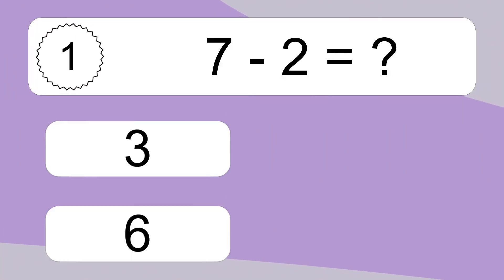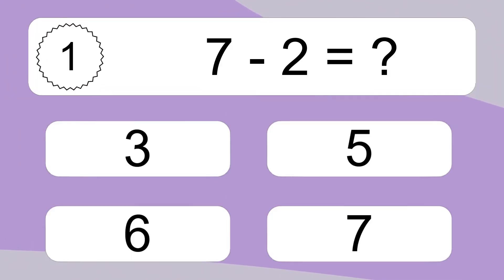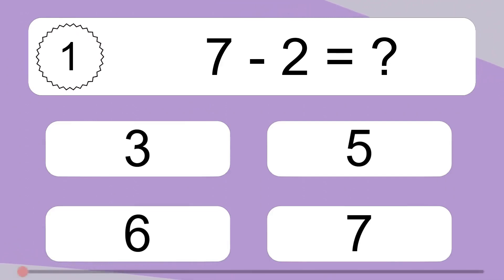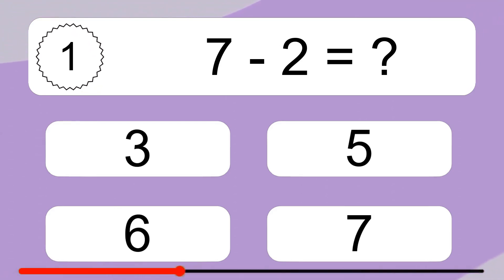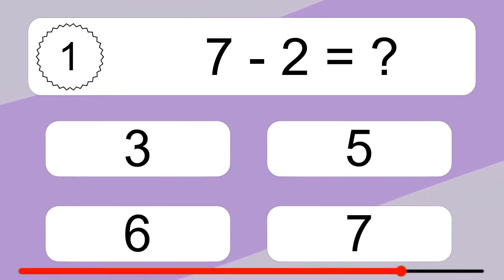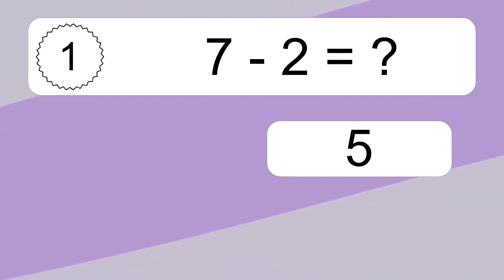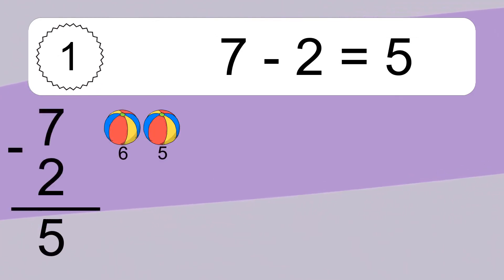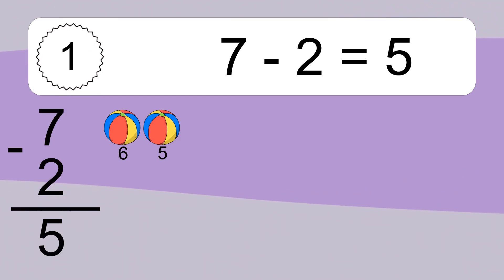7 minus 2 equals what? 7 minus 2 equals 5. Let's count it. 6, 5.